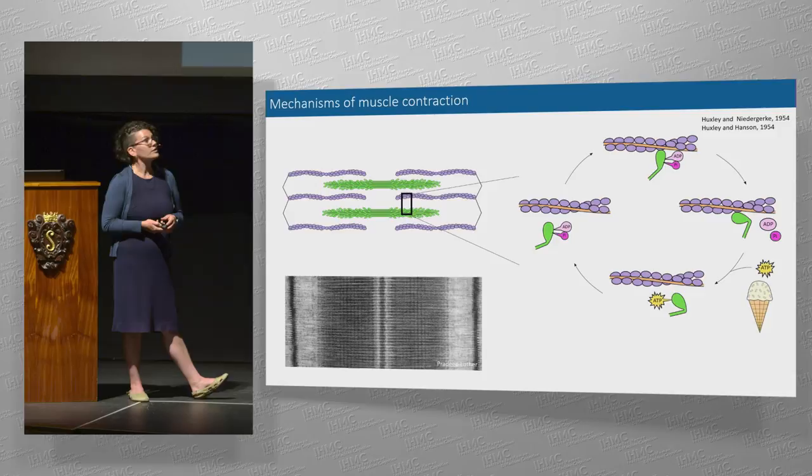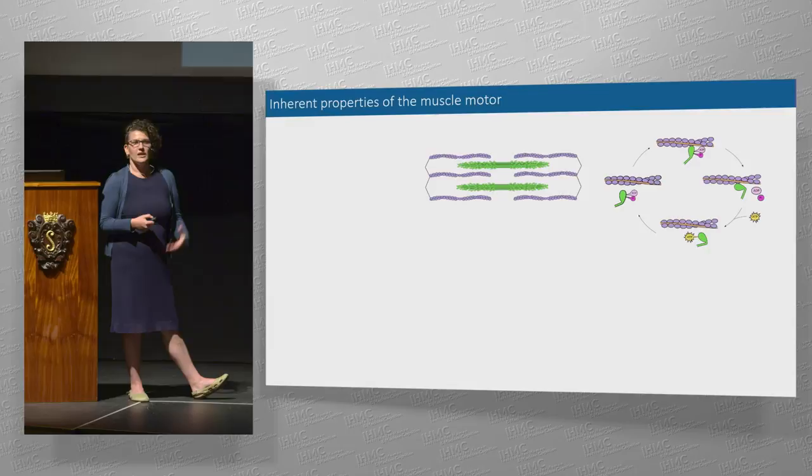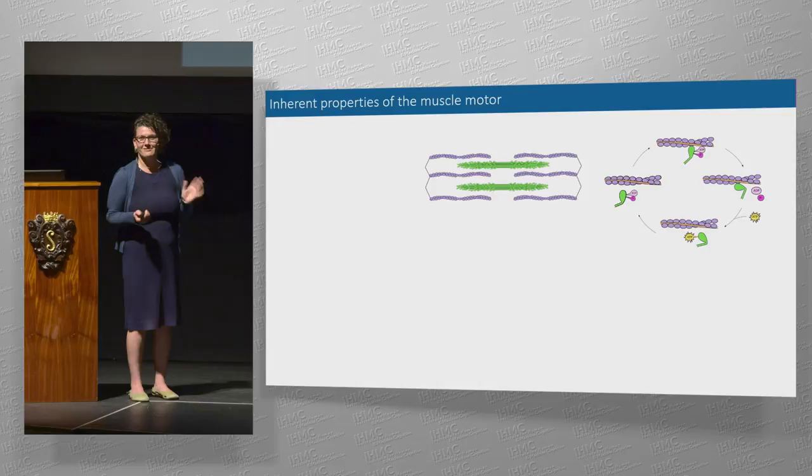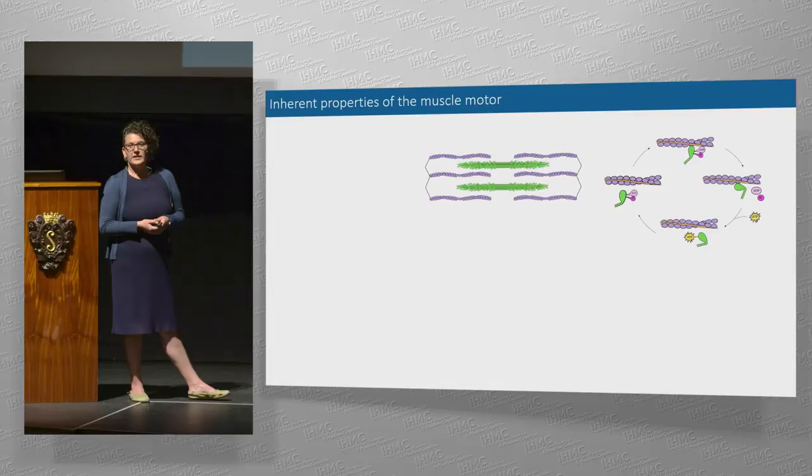This arrangement of contractile proteins and this mechanism of generating force — around 1954, we were like, we got it, we worked this out. We then did a bunch of experiments to try and verify these theories. There are lots of predictions we can make from this kind of motor. If we have a motor that looks like this, it's going to have some properties, and we can think of this as being analogous to an electrical motor.